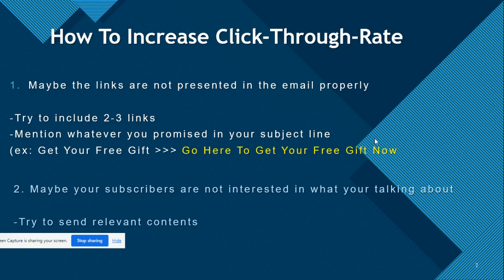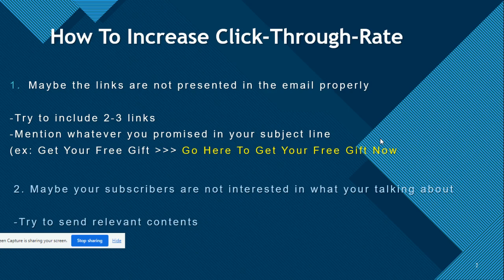For number two — subscribers not interested in what you are talking about — it is because of irrelevant content or irrelevant subscribers. For example, if your subscribers opted in for a keto diet email list, try to send them keto diet related information, keto diet related research and news, and any products related to keto diet. If you send them vegan diet or vegetarian diet content, or how to make money online, they will not click through your email. Try to send relevant content all the time.